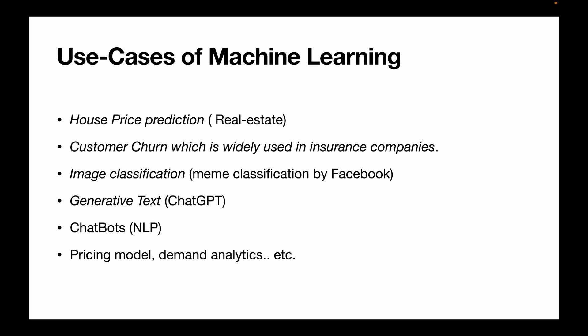Use cases of machine learning: house price prediction, customer churn — which is widely used in insurance companies. Insurance companies have already predicted when you are going to leave their company or unsubscribe their services — that's what we call customer churn. Image classification — the classic example is meme classification by Facebook. Generative text — example, ChatGPT. Building chatbots, price modeling, demand analytics. Demand analytics is where retail companies predict the seasonality of their orders to sustain the market by ordering products in advance.